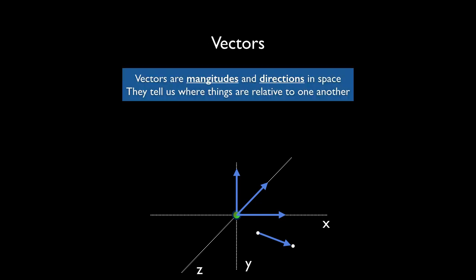Getting into vectors: basically vectors are magnitudes and directions in space — they're both. They tell us where things are relative to one another. The easiest way to think about a vector is that it's an arrow, as you can see in the chart. The x, y, and z axes can each be represented as vectors — each one is a direction in 3D space. Vectors can also go from one point to another, so there can be a vector representing the direction or offset from one point to the second.